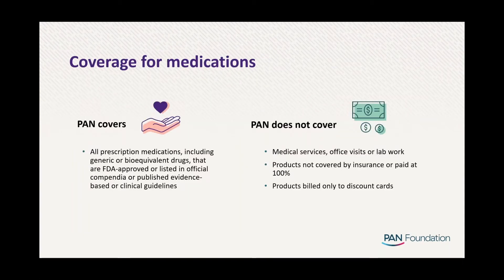A common question we receive is what PAN covers. We cover products that are FDA approved or listed in official compendia or evidence-based guidelines for the specific disease fund. This includes all prescription medications in each disease fund formulary — brand and generic medications, bioequivalent or biosimilar medications, as well as specialty drugs and radiopharmaceuticals. Very few disease funds also cover medical supplies for administering treatments, such as our Parkinson's disease fund.